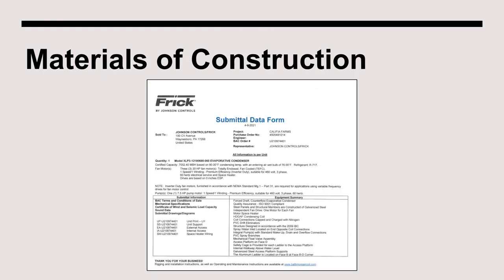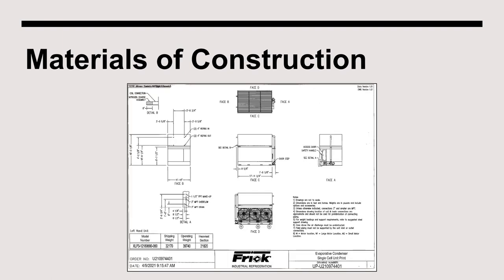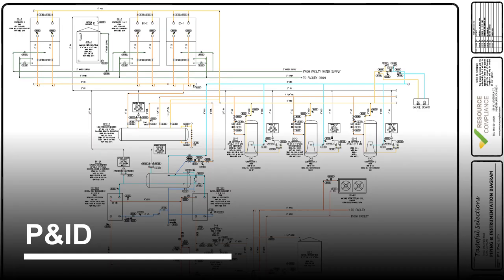When documenting the materials of construction for a condenser, a key document is the condenser submittal containing relevant manufacturer specifications of the condenser. The manufacturer's certified drawing is another key document to have on file for materials of construction. Here we see an example of an evaporative condenser depicted in a P&ID.